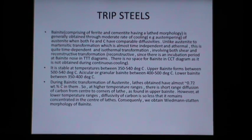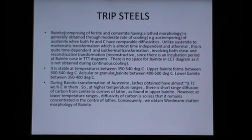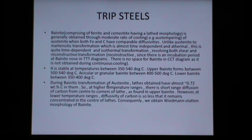There is no space for bainite in the CCT diagram, as bainite is not obtained during continuous cooling from austenite. Bainite is stable at temperatures between 350 to 540 degrees centigrade: upper bainite forms between 500 to 540°C, acicular or granular bainite between 400 to 500°C, and lower bainite between 350 to 400°C. During bainitic transformation of austenite, the laths obtained have almost 0.728 percent carbon.